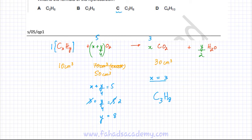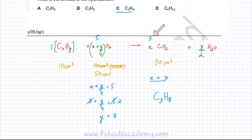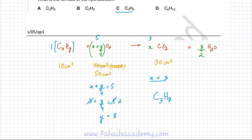The final formula of the hydrocarbon is C₃H₈, so option C is correct. To summarize: 10 cm³ reacted with 50 cm³ of O₂ and produced 30 cm³ of CO₂. The simplest mole ratio is 1 : 5 : 3, giving X = 3 and X + Y/4 = 5, which yields Y = 8, confirming the answer is C₃H₈.